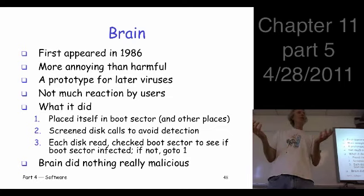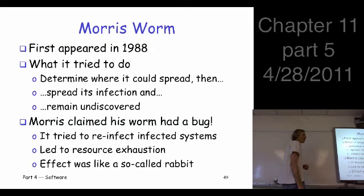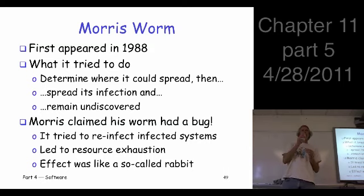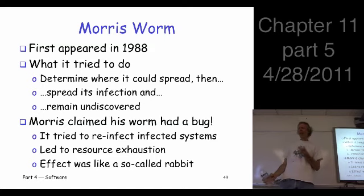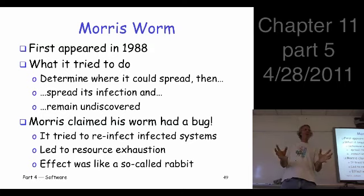People just thought of it as a curiosity and didn't get too worked up about it. The Morris worm is a very different beast — this came about in 1988. So worm versus virus: active propagation, which implies a network. Was there a network in 1988? There was, but it's nothing like the internet of today. Don't even think about the internet of today — nothing like that.